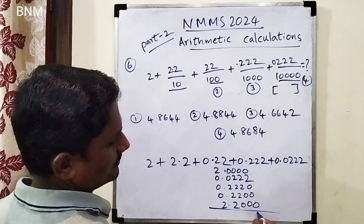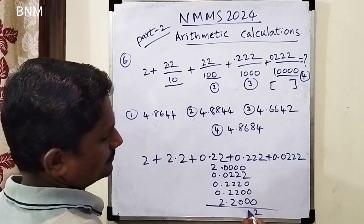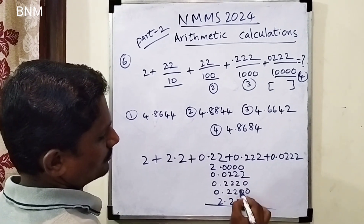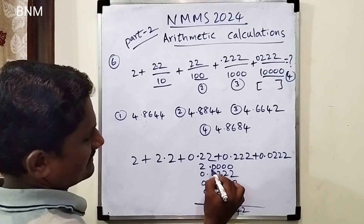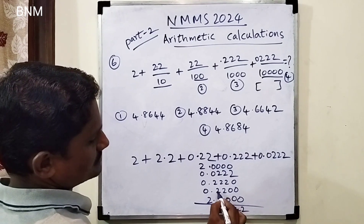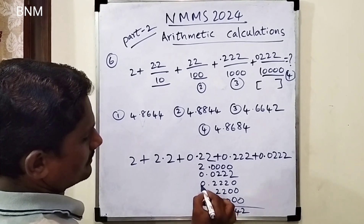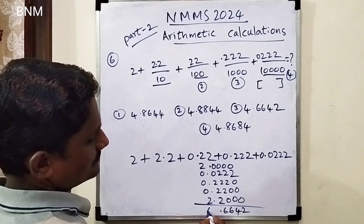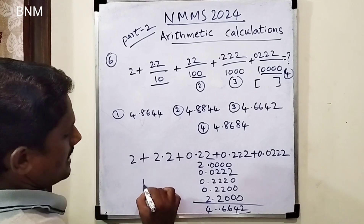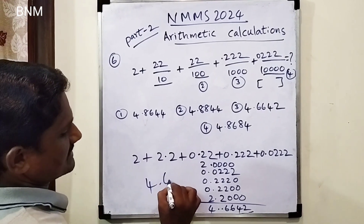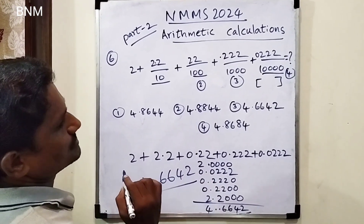You must now do the addition. Two plus two is four. Two plus two plus two is six. Two plus two plus two is six. Two plus two is four. So what we get is 4.6642. That is the answer.